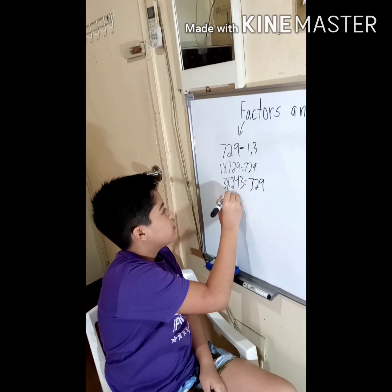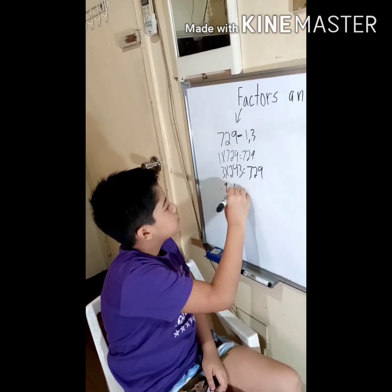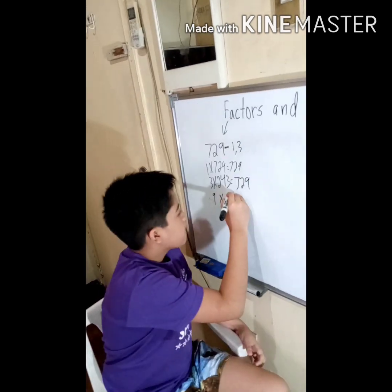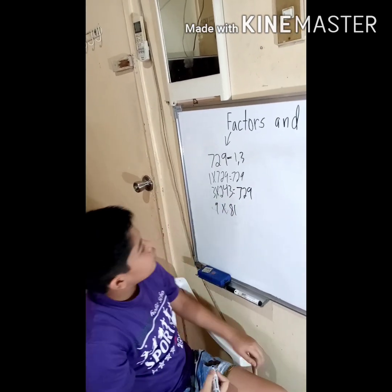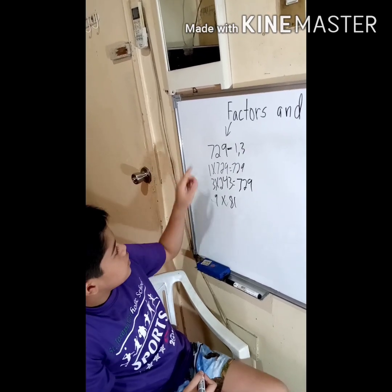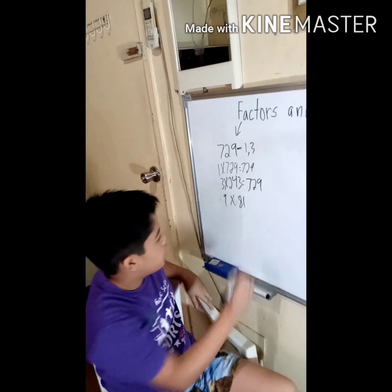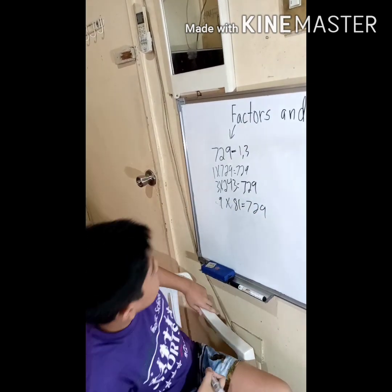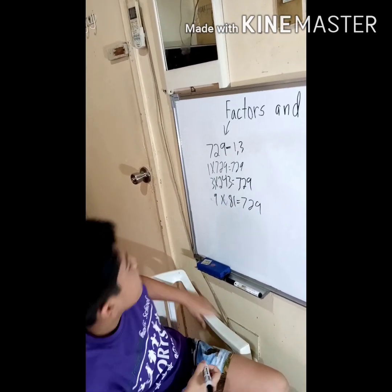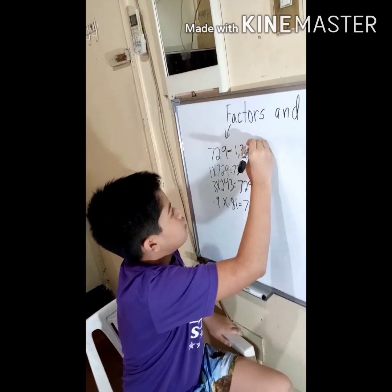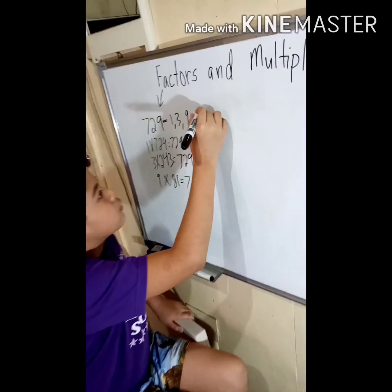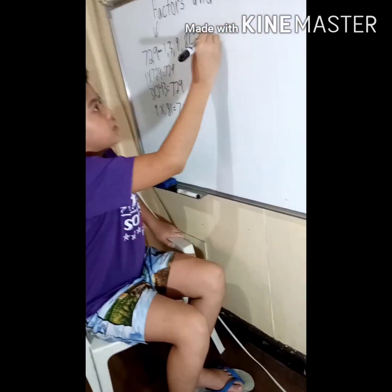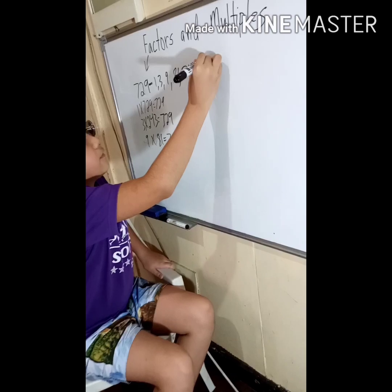9 as well — 9 times 81 equals 729, so 81 is a factor of 729 as well. So the factors of 729 are 1, 3, 9, 81, 243, and of course the number itself, 729.